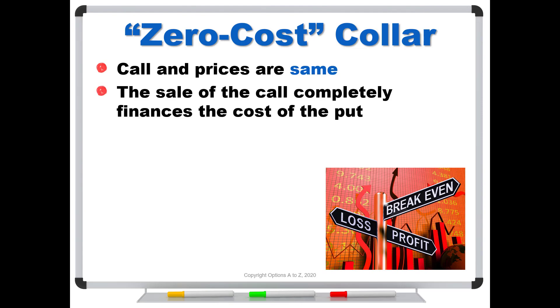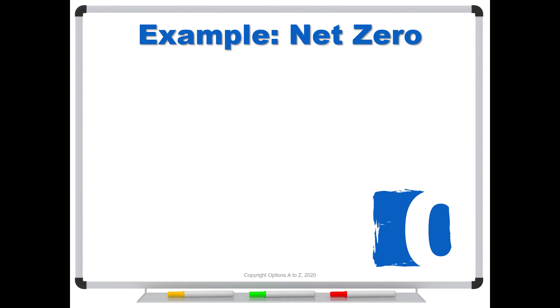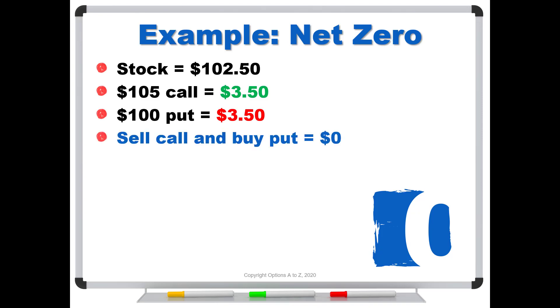The idea here is that the sale of the call completely finances the cost of the put. There's no cost to sell the call and buy the put. Here's an example: let's say the stock is trading at $102.50, we have a $105 call trading for $3.50, and a $100 put also trading for $3.50. This is a very common scenario when your strikes are equally distant from the stock price.